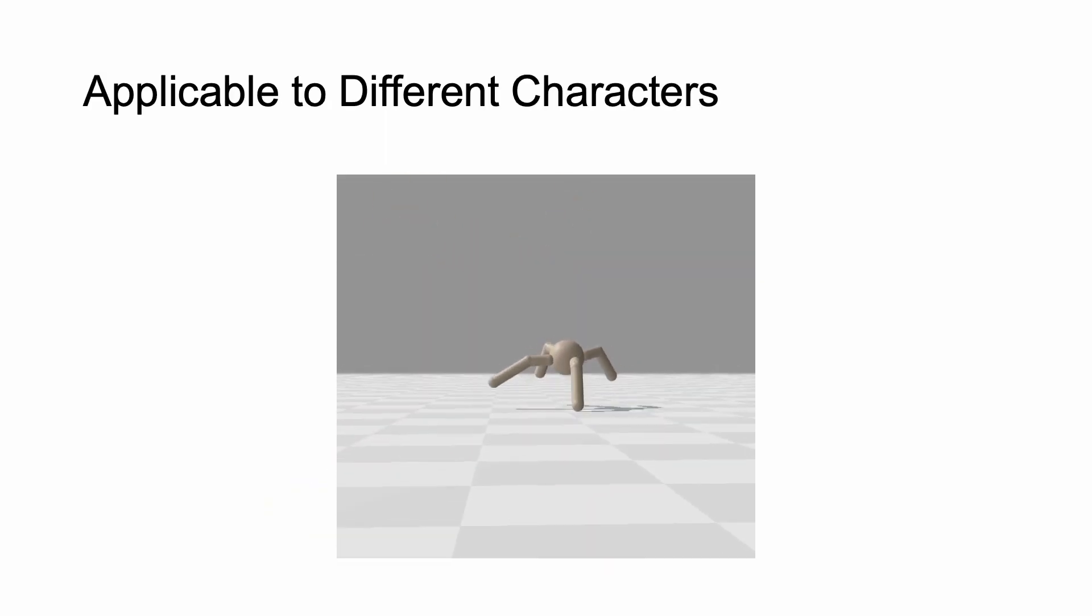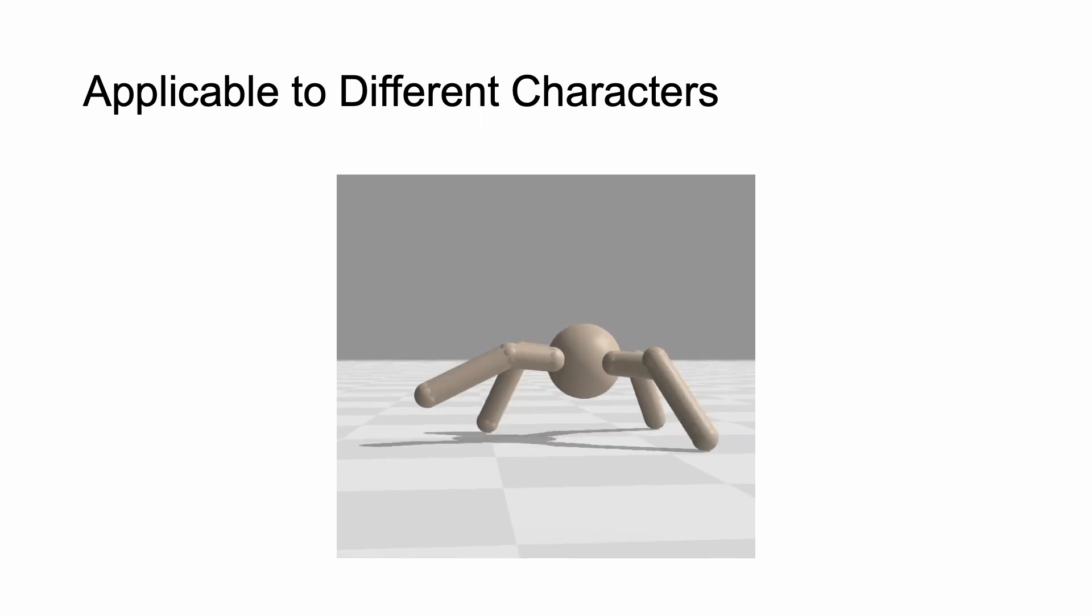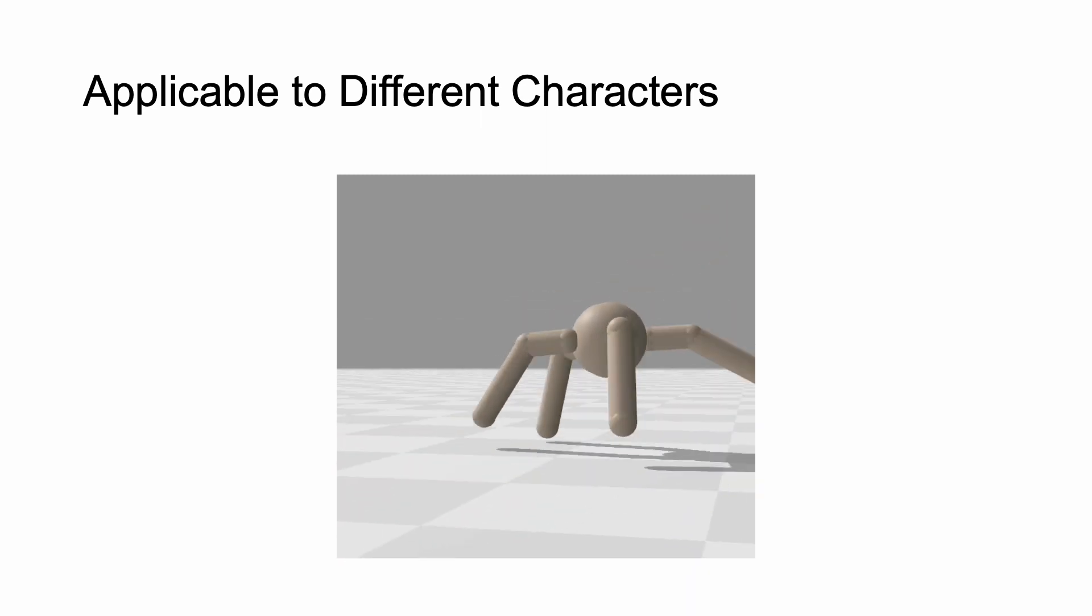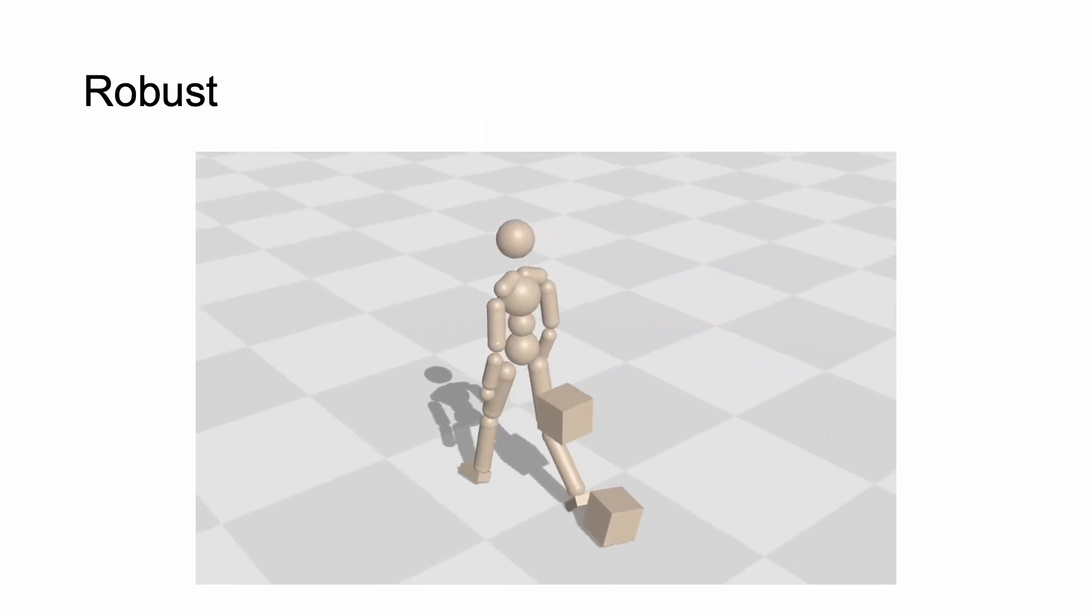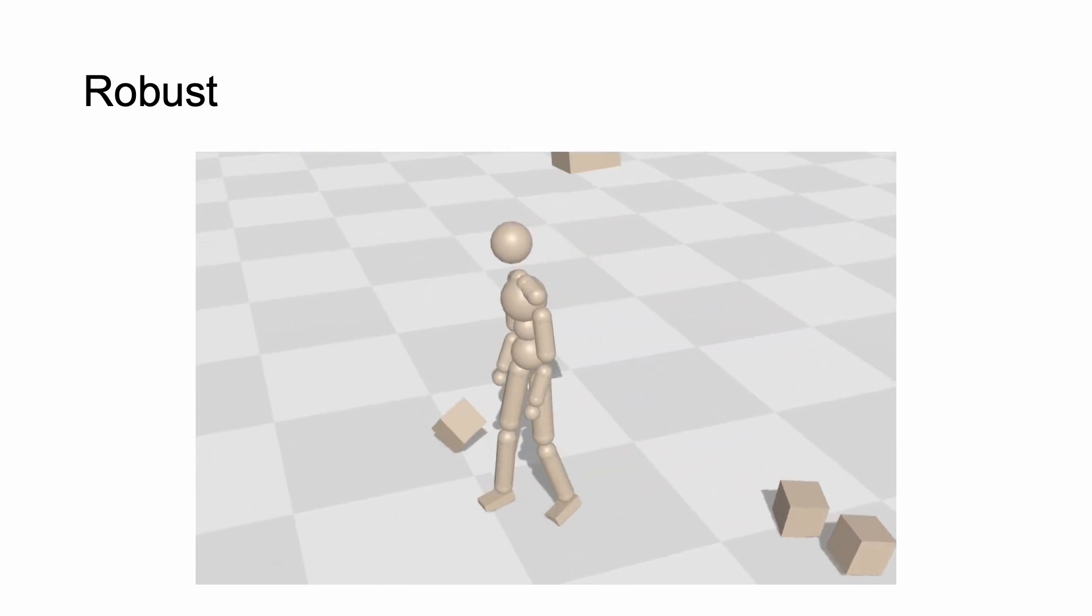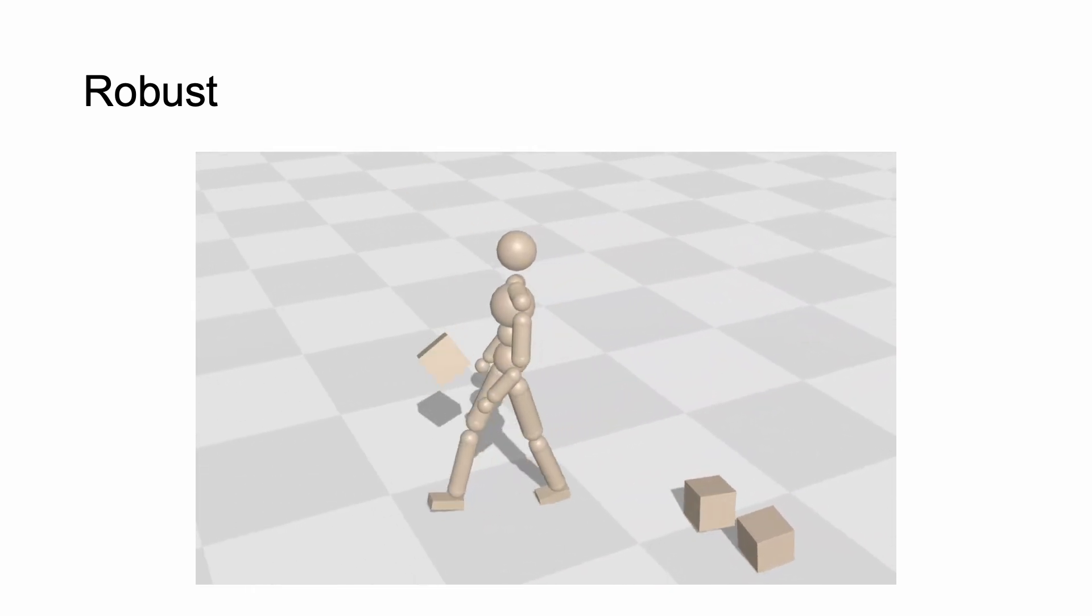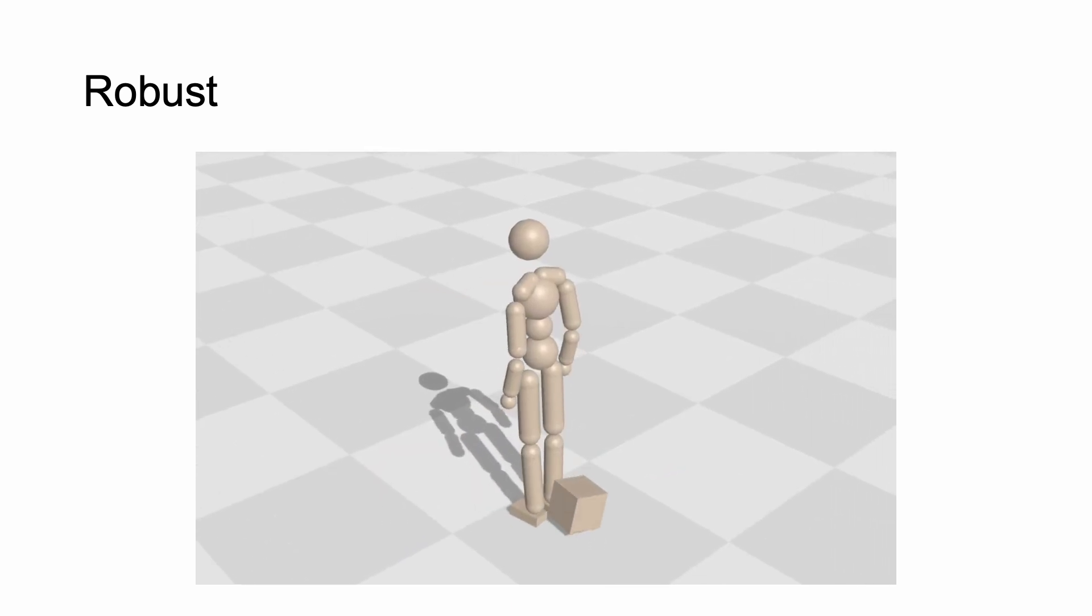DiffMimic's capability also extends beyond just mimicking simple humanoid motions, as it also supports motion imitation for a diverse range of characters and scenarios. DiffMimic is also robust against external perturbations, showcasing its adaptability and resilience in varying conditions.